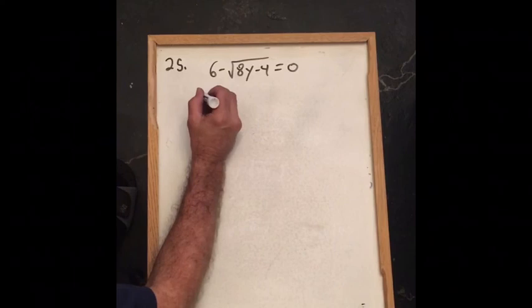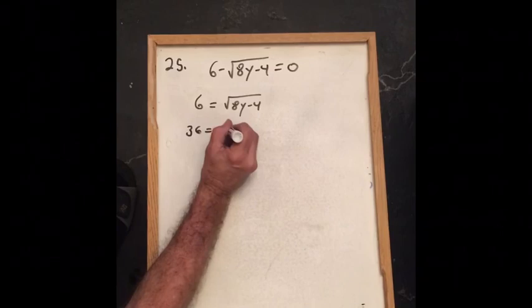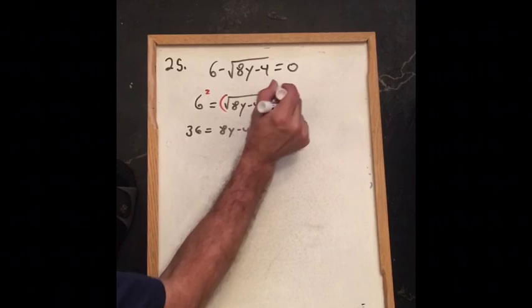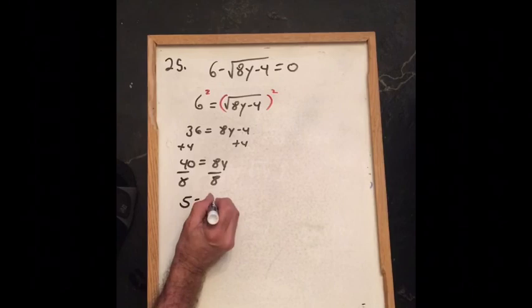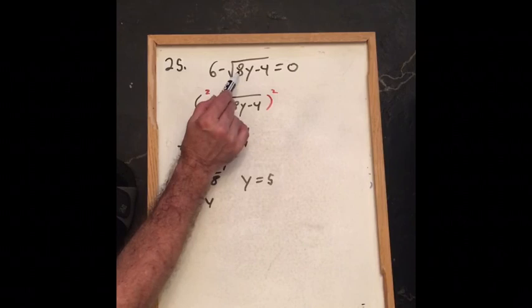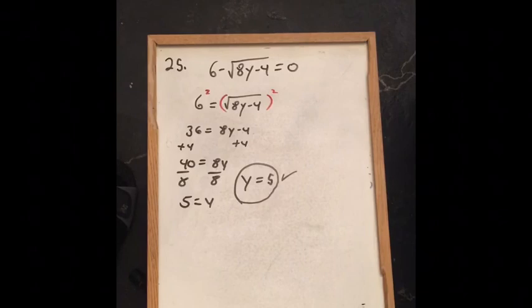For problem 25, adding 6 to both sides gives 6 equals root of (8y minus 4). Squaring both sides: 36 equals 8y minus 4. Adding 4 gives 40 equals 8y, and dividing by 8 gives y equals 5. Checking: 8 times 5 is 40, minus 4 is 36, so 6 minus root 36 equals 6 minus 6 equals 0. This checks out, so y equals 5.